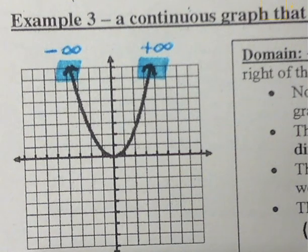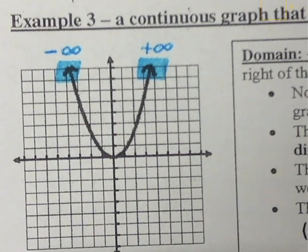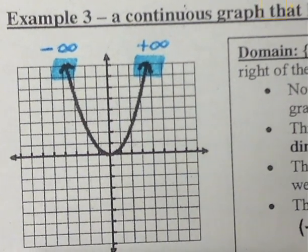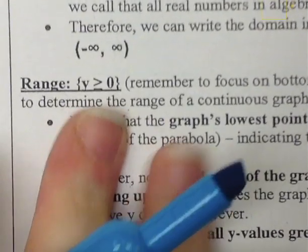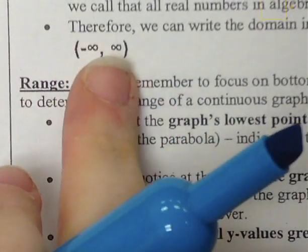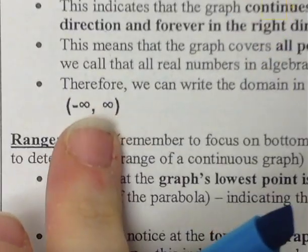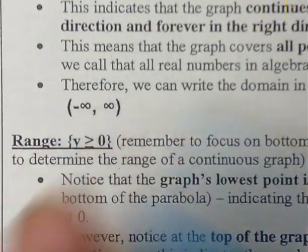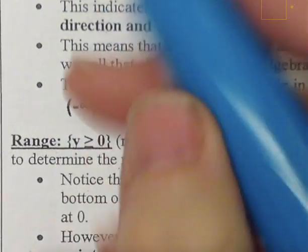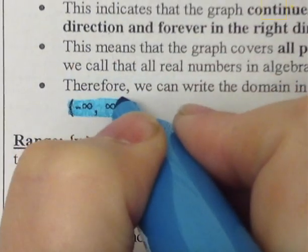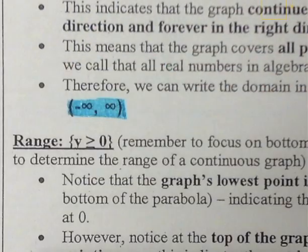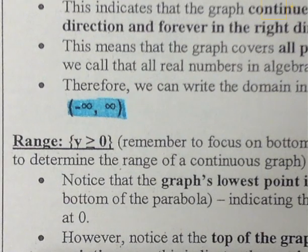Infinities can never be reached, so we're going to have open brackets. The interval notation for domain will be written as open bracket, negative infinity, comma, positive infinity, open bracket.